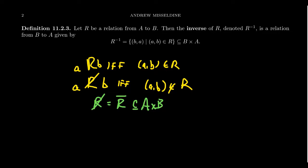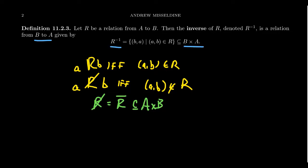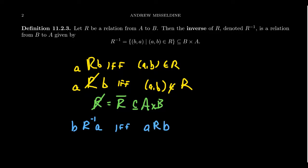Another important relation we can construct is the inverse. If R is a relation from A to B, then the inverse R⁻¹ is a relation from B to A — a subset of B cross A — such that (B, A) is in R⁻¹ exactly when (A, B) is in R. So B is related by the inverse to A if and only if A is related to B. You can also take the negation of the inverse, combining both constructions.